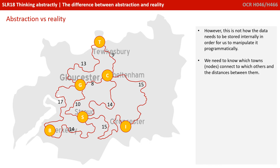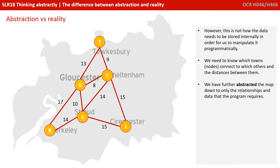However, this is not how the data needs to be stored internally in order for us to manipulate it programmatically. We need to know which towns, or nodes, connect to which others, and the distances between them. We've further abstracted the map down to only the relationships and the data that the program therefore requires.